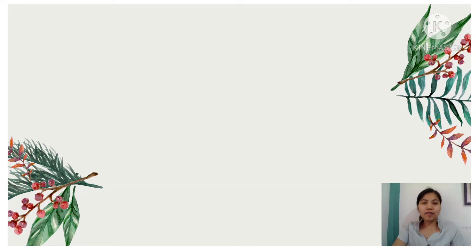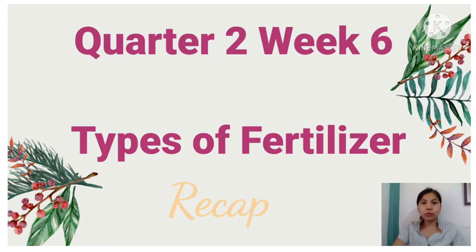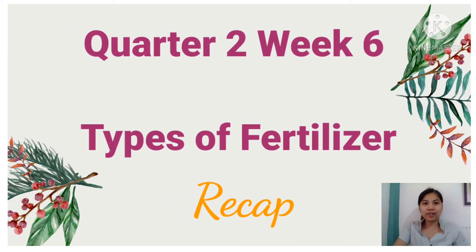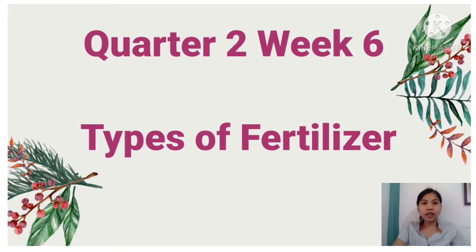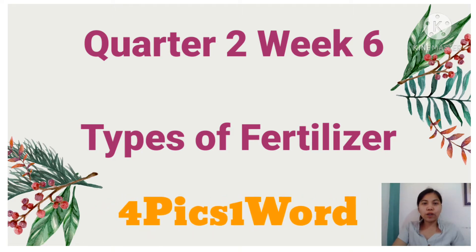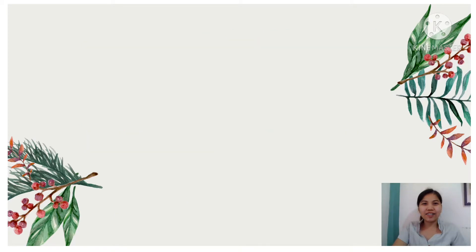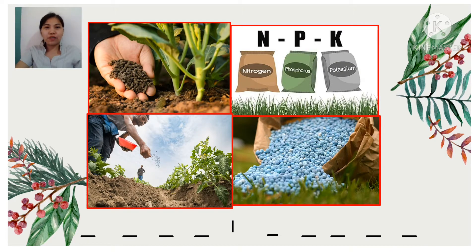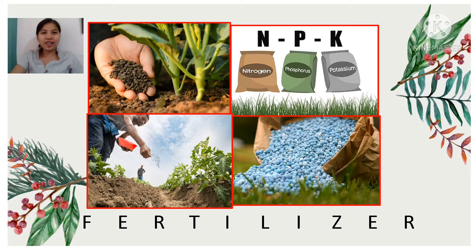Can you still remember our previous lesson in Quarter 2 about the types of fertilizer? Today we're going to have a recap by having a game called 4 Fixed One Word. Let's start! Let's have the first set of pictures. That's correct — Fertilizer!